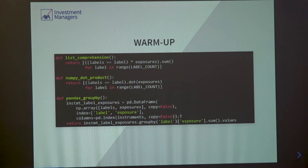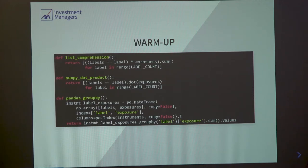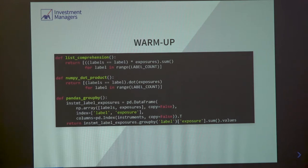Then people will come up with Pandas if you have more complicated operations, especially for data analysis. Most of the Pandas APIs are written at the Cython level, so you can enjoy C-level performance when all your operations are under the Pandas API. One caveat: be aware that every Pandas operation creates a copy, and copy is an overhead to your performance. The function used here is quite native — groupby the label, sum the exposures, and give the result.